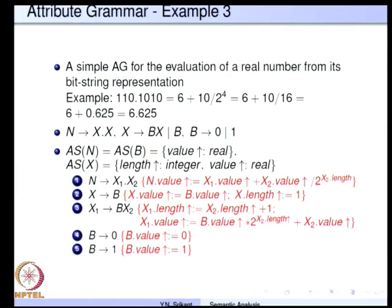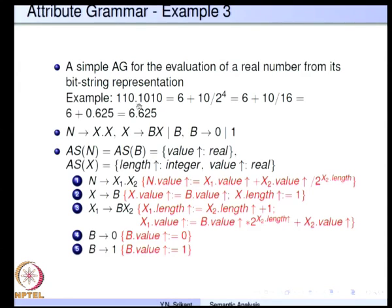A second example computes the same real number from a bit string, but with a very different method. Here the grammar uses just one non-terminal X: N going to X dot X, X going to B X or B, B going to 0 or 1. When X produces bits, it is not possible to know whether we are on the right or left side of the dot, so the previous strategy cannot be used. Instead, we compute the value of the whole string as if there is no dot.